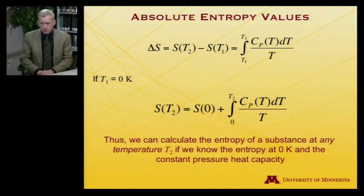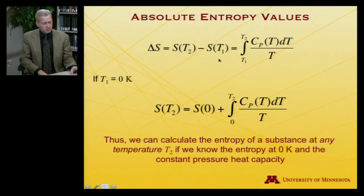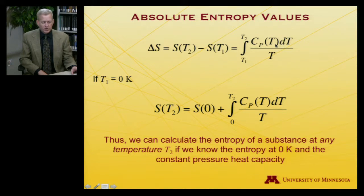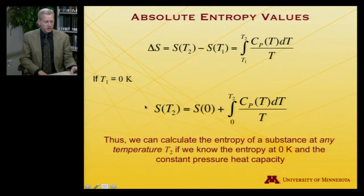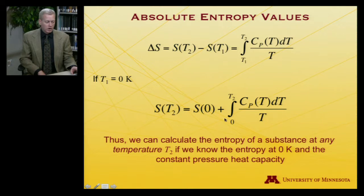Let me recall how I closed the last lecture: an entropy change as you go from temperature 1 to temperature 2 can be determined by integrating the constant pressure heat capacity over that temperature range divided by T. So if we start at 0 Kelvin, we can assign an absolute entropy at a given temperature as the entropy at 0 plus the integral ranging from the lower limit of 0 Kelvin up to T2.